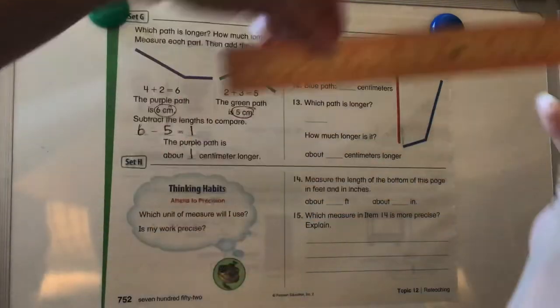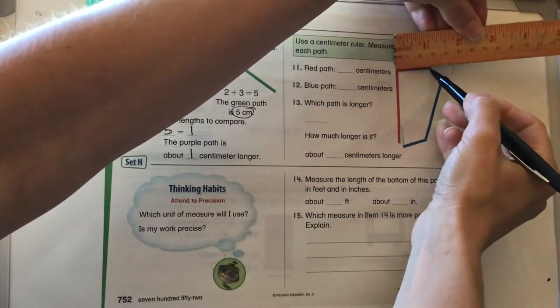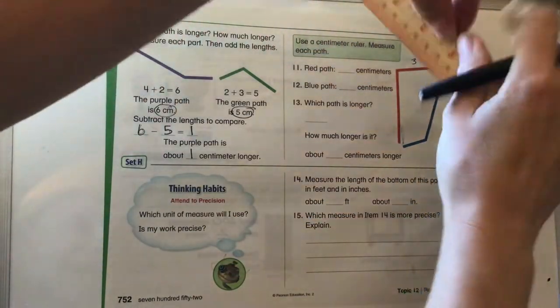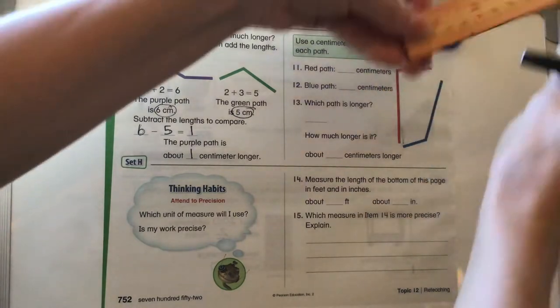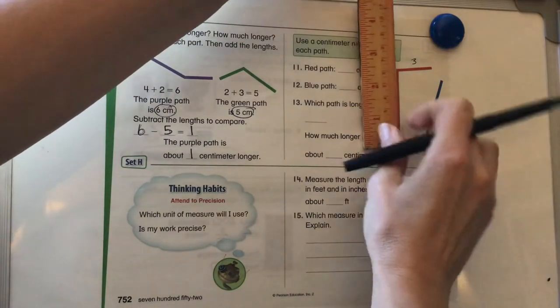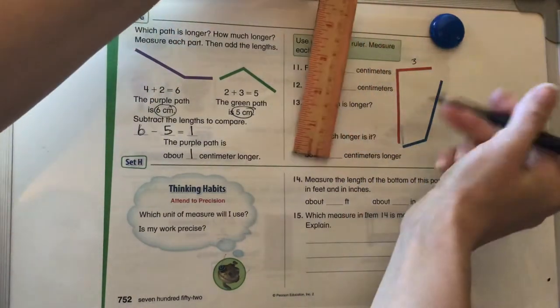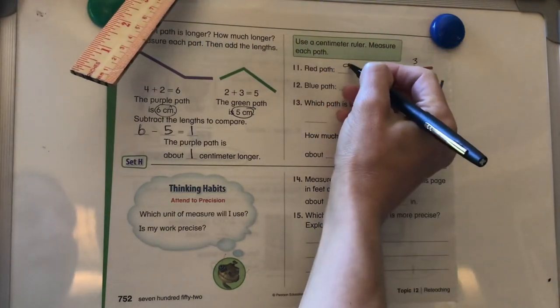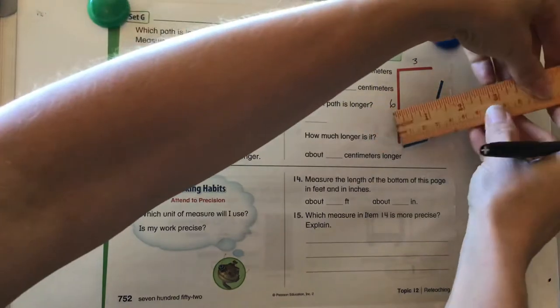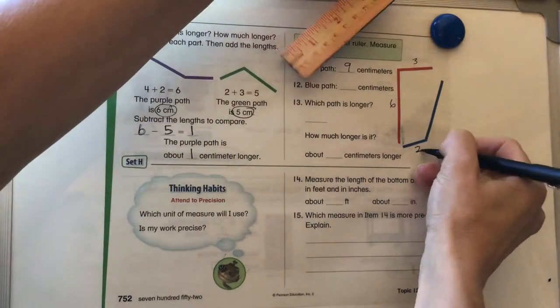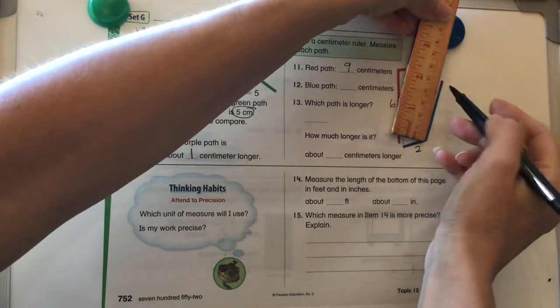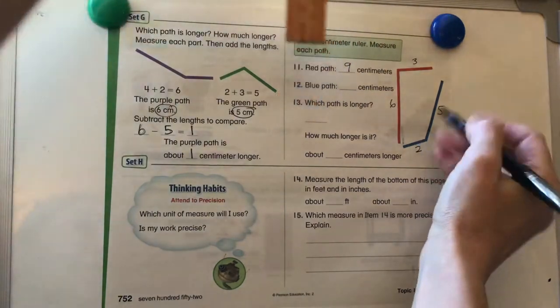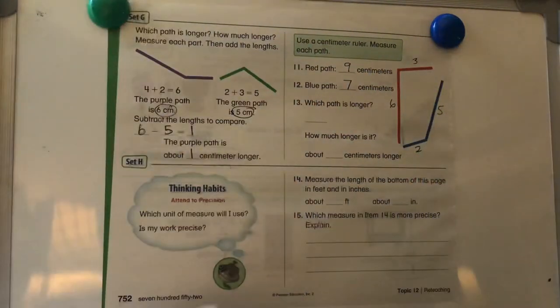The red path, let's see how many centimeters this is across here. This is about three. And then let's measure from here to here is six. So I know the red path three plus six is nine. Let's take a look at the blue path. That's about two. And this here is about five. So two plus five is seven.